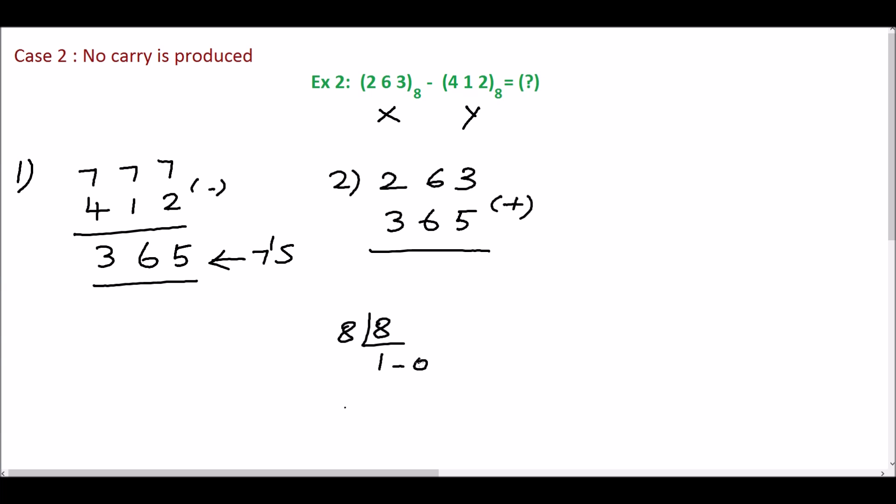The quotient is 1 and the remainder is 0, so the equivalent octal number is 10. 0 is the sum and 1 is the carry. Write sum, carry here. 1 plus 6 plus 6 is 13. 13 is also not an octal number.